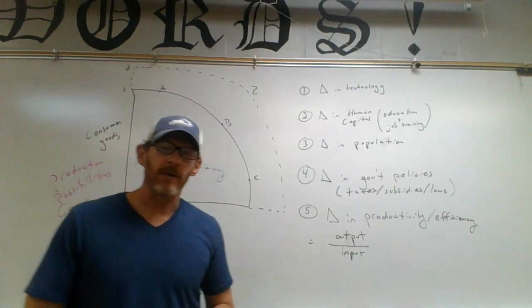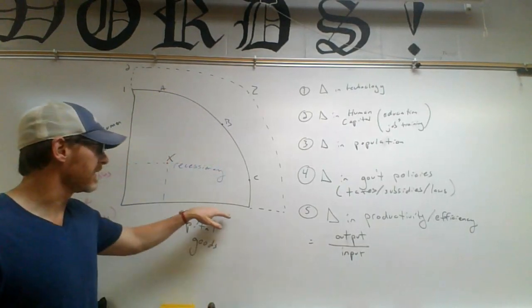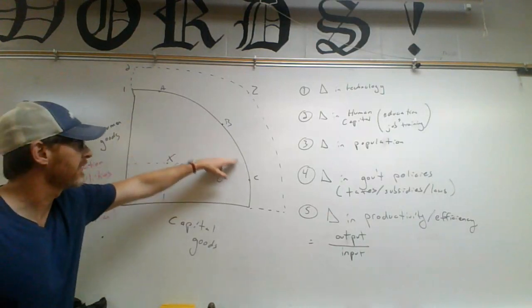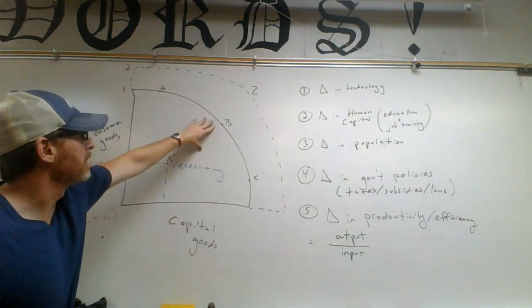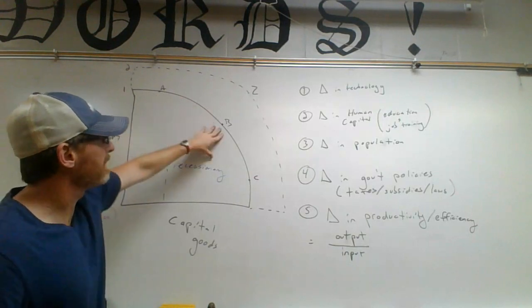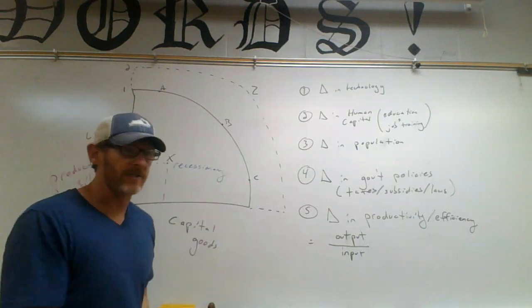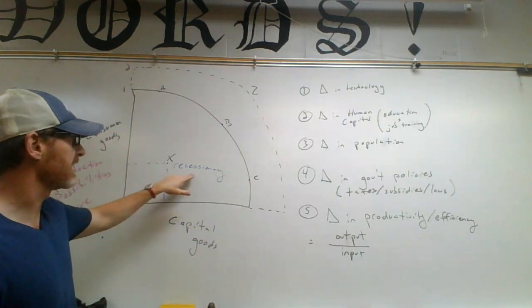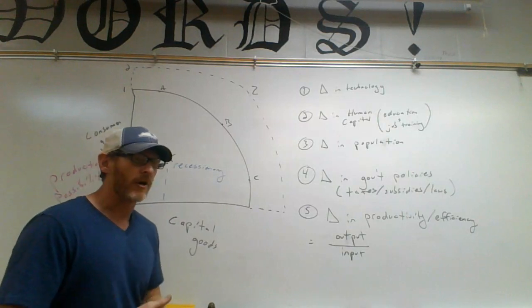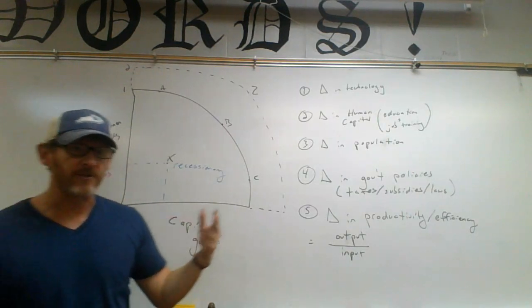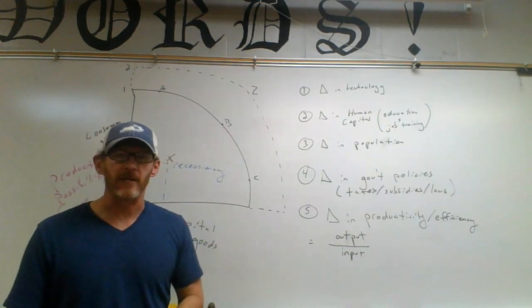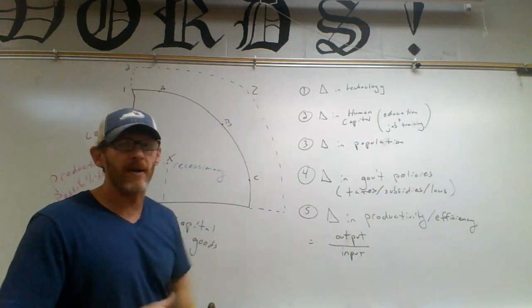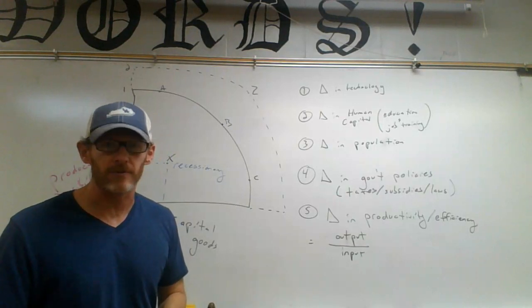Okay, so now that we've looked at the production possibilities curve, if this line is pure, we're using all of our resources. So if we're producing at A, B, or C, we're using all of our resources as efficiently as possible. We know point X, we're calling it recessionary because we're not using all of our resources. So that means people aren't working, factories are idle, maybe some fields aren't being used to grow stuff. And then we know that point Z way up here, as for right now, is impossible because we don't have enough resources.